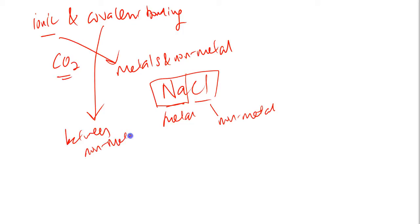For example, carbon dioxide. Carbon is a non-metal, oxygen is a non-metal, so the bonding will be covalent bonding. So this is a covalent compound and this is an ionic compound.